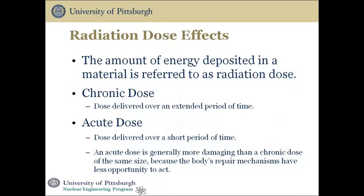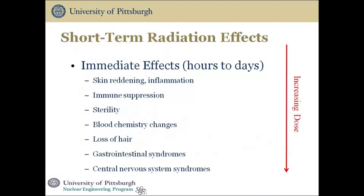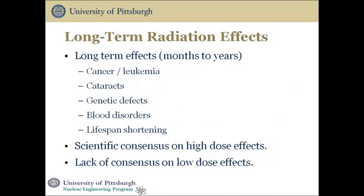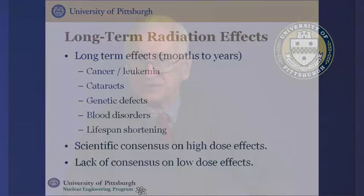Let's look at the short-term effects of large amounts of radiation. The immediate effects — hours to days — of short-term acute radiation doses start with skin reddening and immune suppression, and increase up to loss of hair and central nervous system damage as the dose increases. Long-term effects on the order of months to years include cancer, cataracts, genetic defects, and lifespan shortening. There is no disagreement among scientists as to the effects of high doses — high doses can be fatal. However, there is a lack of consensus on the effects of low doses, and we'll come back next time to look at what we know about high acute doses and low chronic doses.